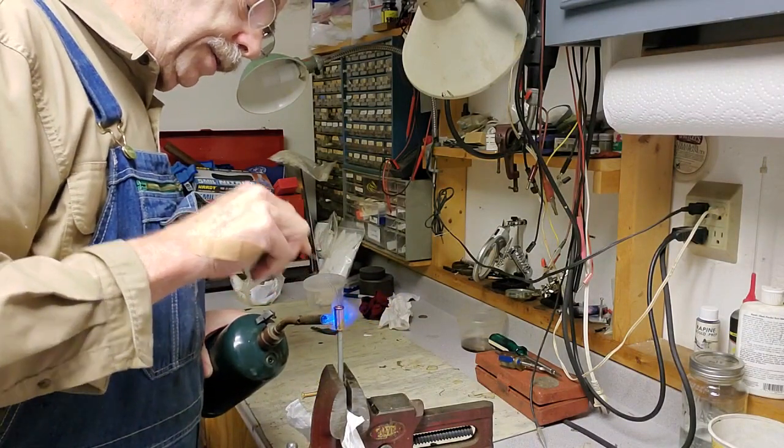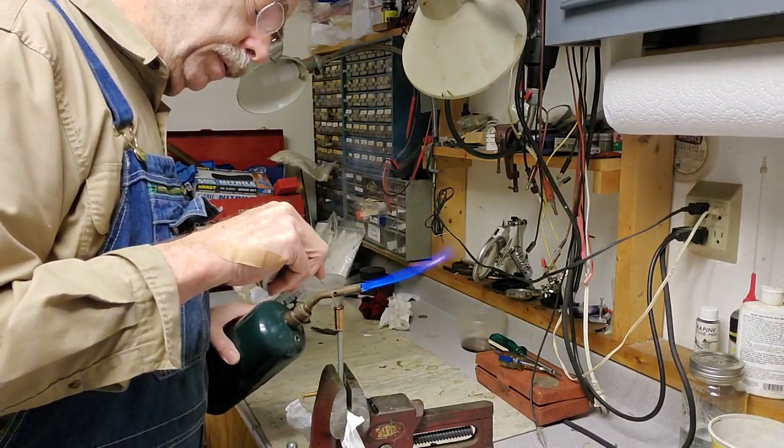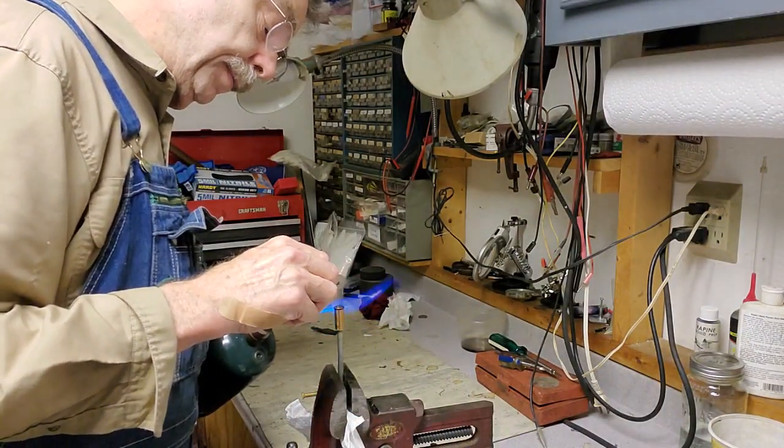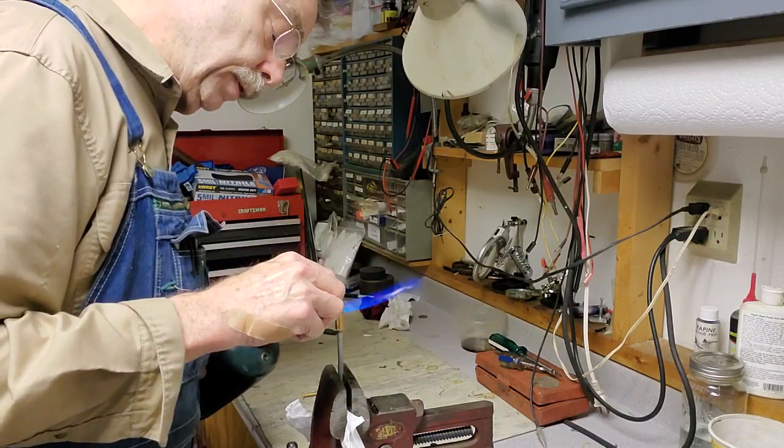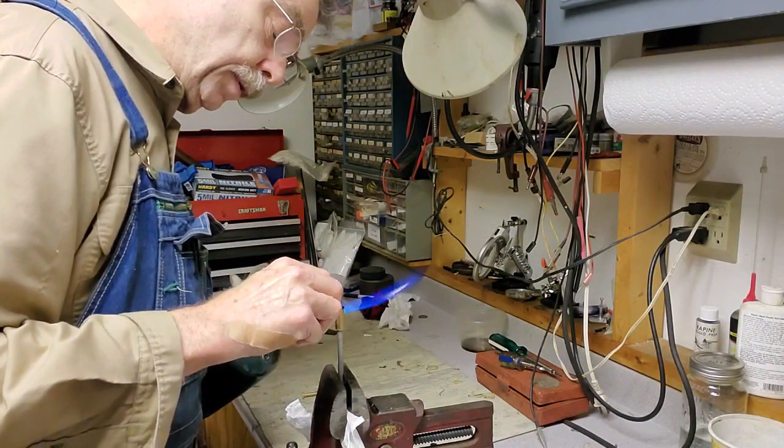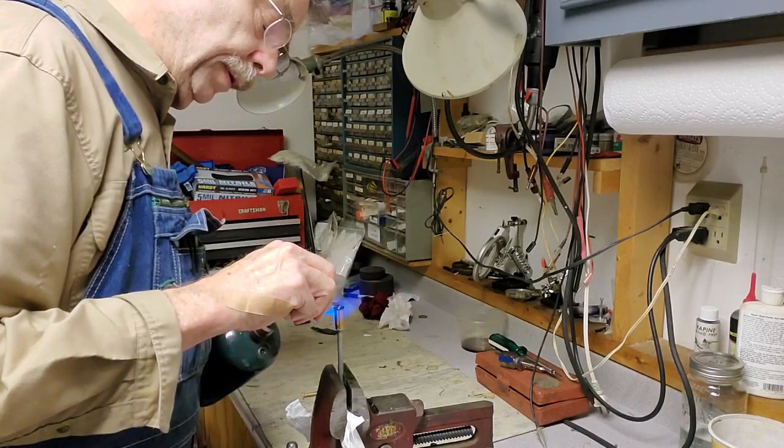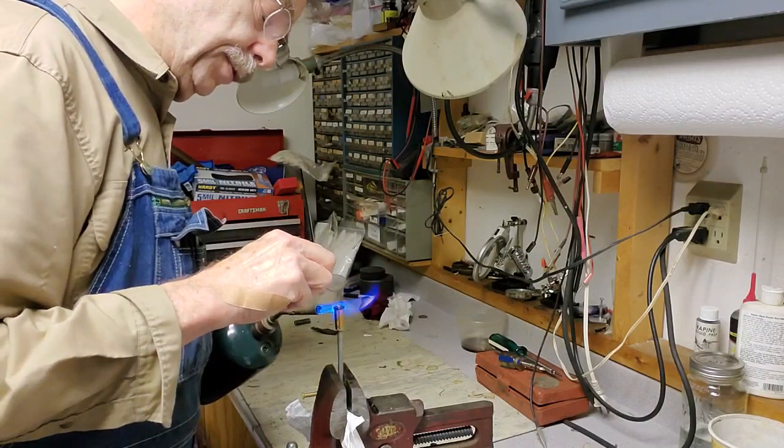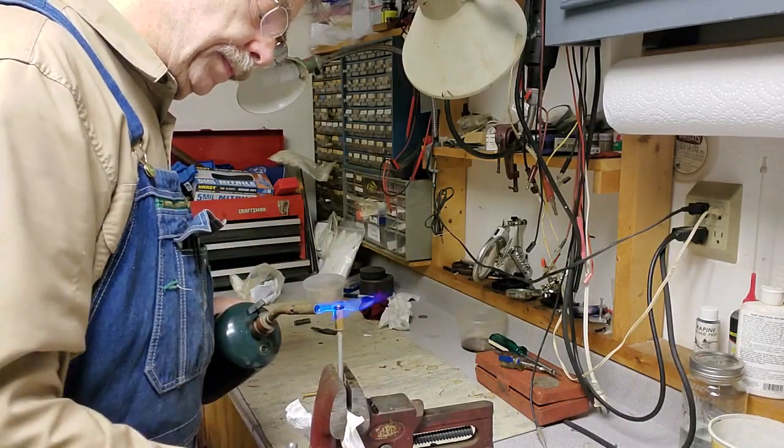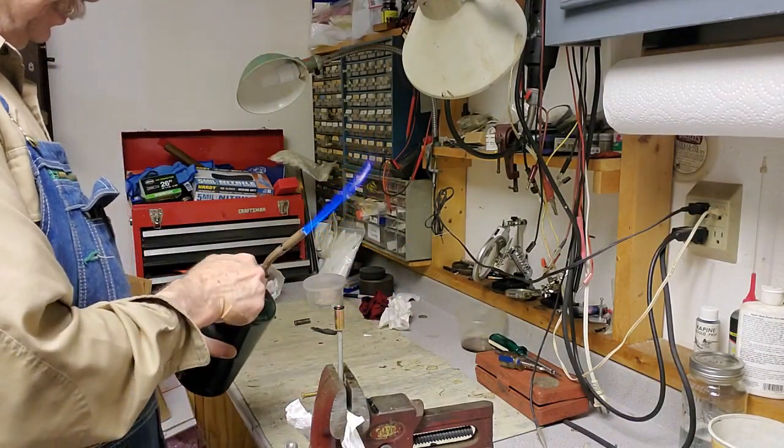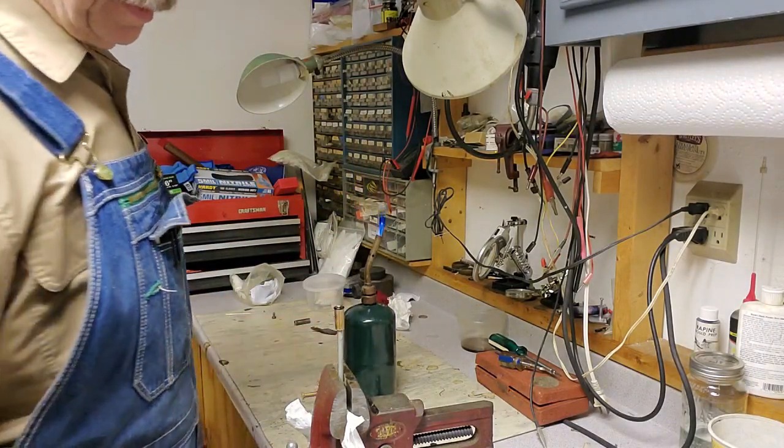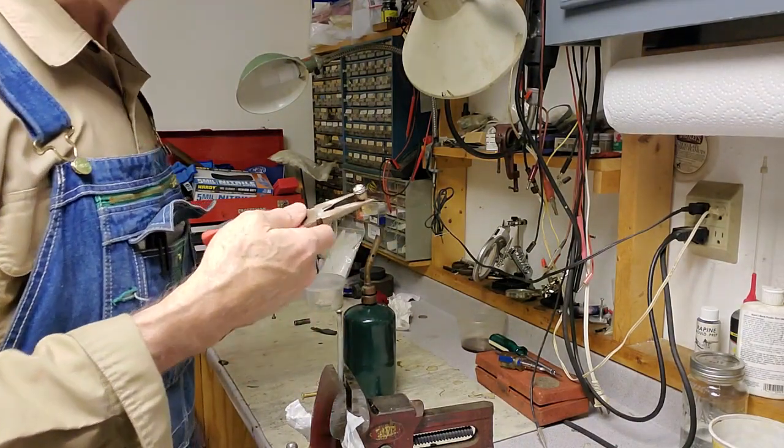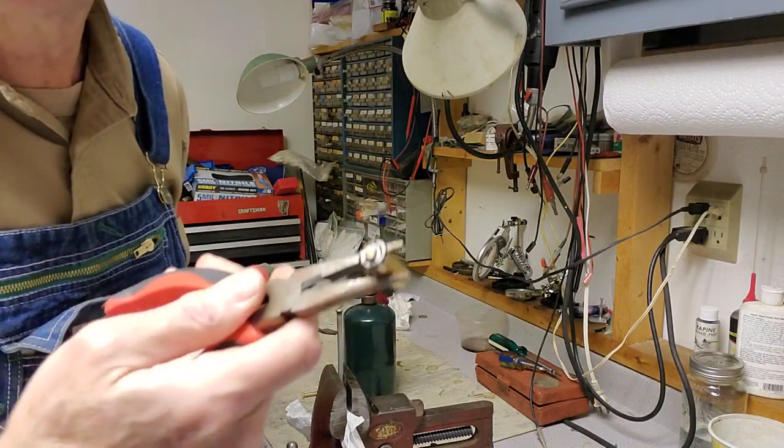I'm going to get this hot enough to flow some solder down into the primer hole. Okay, now I've got my plug ready with a pair of tweezers here. I'll heat this up to make sure that solder's molten, put the plug down in the hole, then heat it back up again because I want that brass plug to get hot enough for the solder to adhere to it. That should do it.